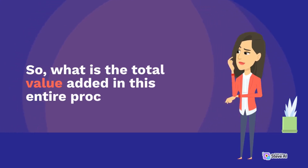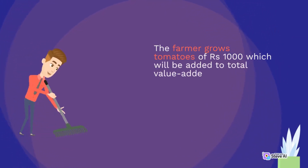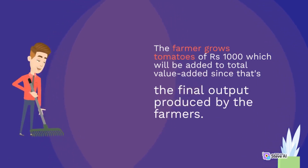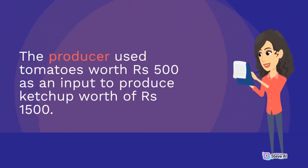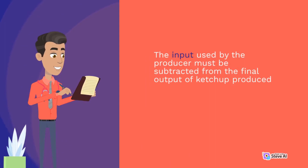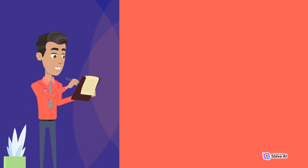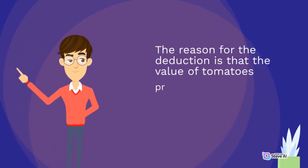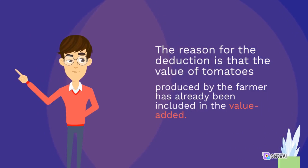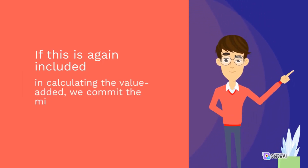The ketchup producer, using tomatoes as input, produces ketchup worth 1500 INR. So what is the total value added in this entire process? The farmer grows tomatoes of Rs. 1000, which will be added to total value added since that's the final output produced by the farmer. The producer used tomatoes worth Rs. 500 as an input to produce ketchup worth Rs. 1500. The input used by the producer must be subtracted from the final output of ketchup produced by him, i.e., 1500 minus 500 equals 1000. The reason for the deduction is that the value of tomatoes produced by the farmer has already been included in the value added. If this is again included in calculating the value added, we commit the mistake of double counting.